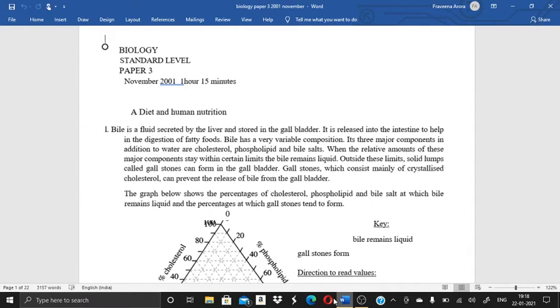Basically this paper one has to complete in 1 hour 15 minutes. So the first question which was given over here was, bile is a fluid secreted by the liver and stored in the gallbladder. It is released into the intestine to help in the digestion of fatty foods. Bile has a very variable composition. Its three major components in addition to water are cholesterol, phospholipid and bile salts.